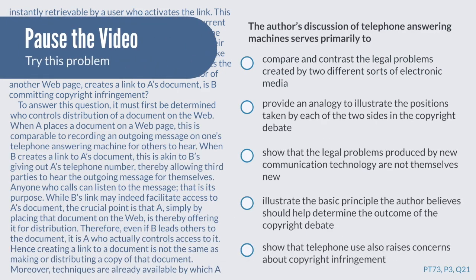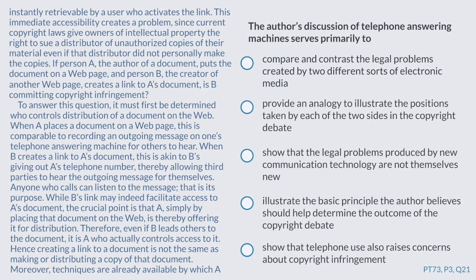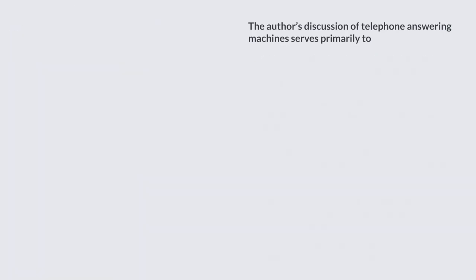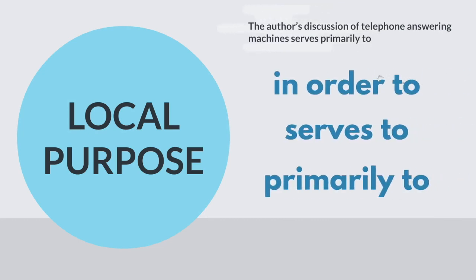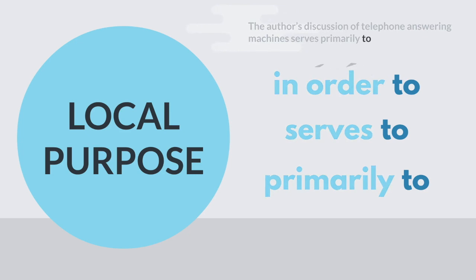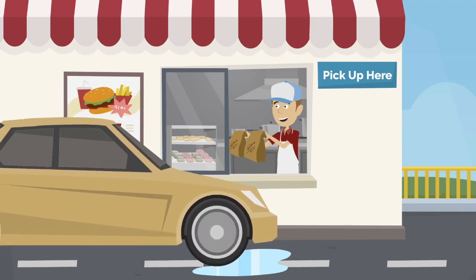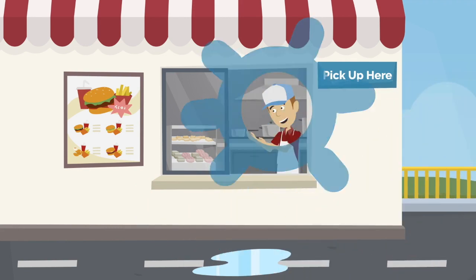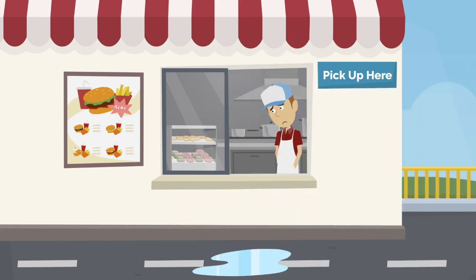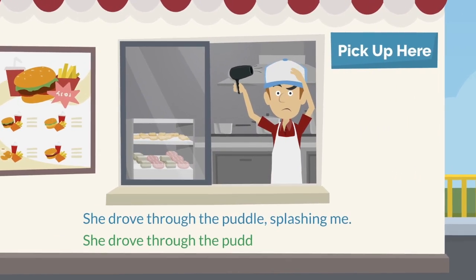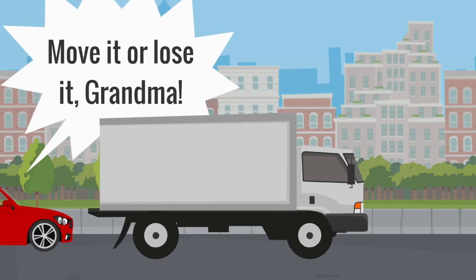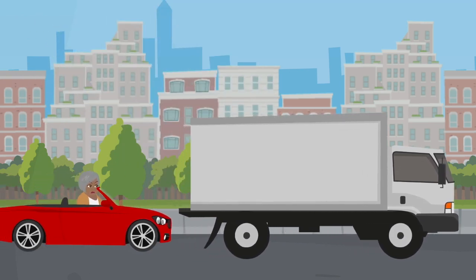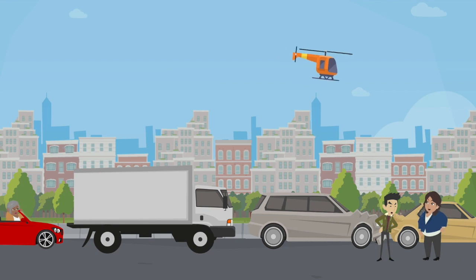Let's try a new question type — local purpose. You identify it by seeing in the question stem some infinitive: 'in order to do this,' 'primarily to do that.' Infinitives convey purpose. If we wrote 'she drove through the puddle, splashing me,' that just speaks to the result. But if we say 'she drove through to splash me,' that speaks to her intent. To figure out why something's happening, you often need a wider lens, so you want to zoom out on local purpose questions to see what's really going on.